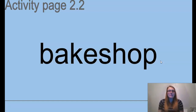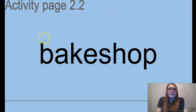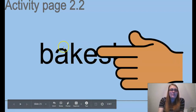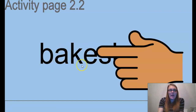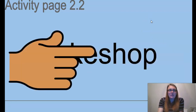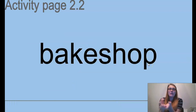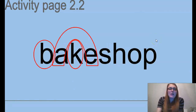Now we're moving on to activity page 2.2. We're going to look at some compound words — this is when one word is made up of two smaller words. If you get stuck trying to read one, cover part of the word at a time, just read a section and then put them together. For example, if you cover up the ending, you can see the magic E on this word, so the A says its name: B, A, K, bake. Then switch and cover the other side — shop — so the word is bakeshop. The A and the E are working together, shown with a horseshoe shape to trace over them.